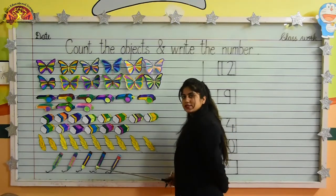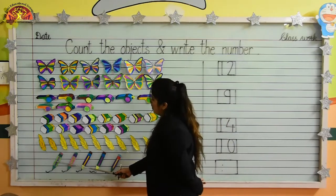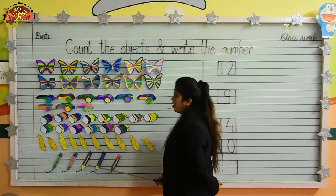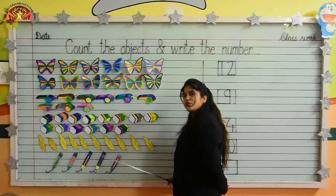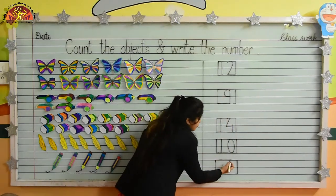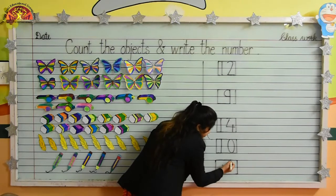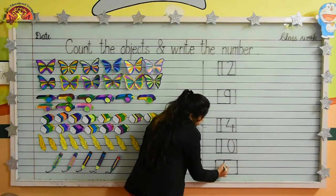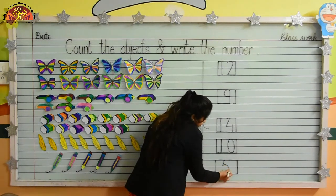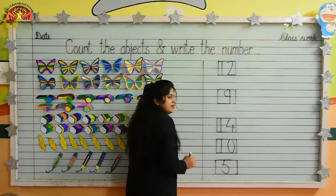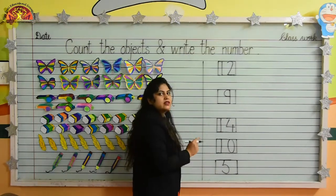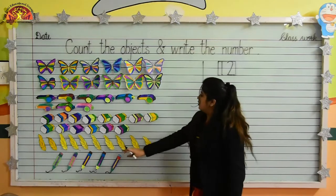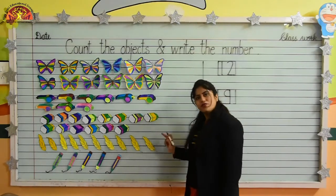Kids, tell me how many pencils are there? Let's count with me: 1, 2, 3, 4, 5. There are 5 pencils. Now we will write numeral 5. In this box, make a sleeping line like this, slanting line, now make a curve like this. Tell me kids, which numeral is this? This is numeral 5. And how many pencils are there? There are 5 pencils.